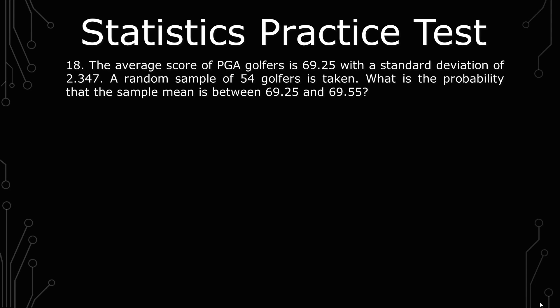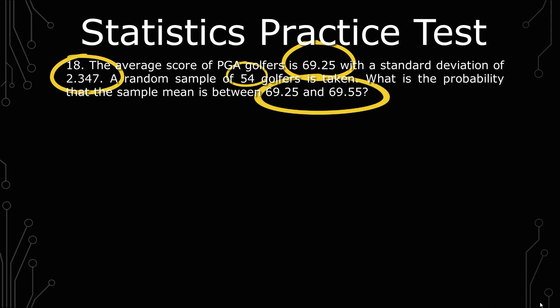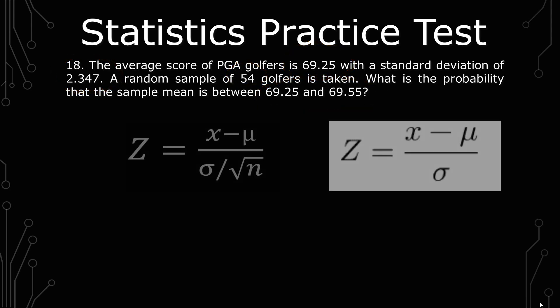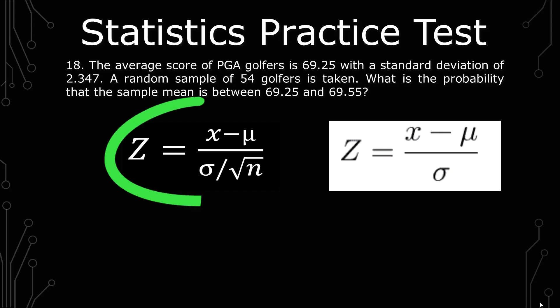To see what we need to do, we need to take stock of what we are given. The first thing we're given is the mean, standard deviation, a sample size, and then we're told to take the difference between two numbers. Because of the first three things, we know that we're doing a z-score calculation for the sample distribution, because we are given a sample.